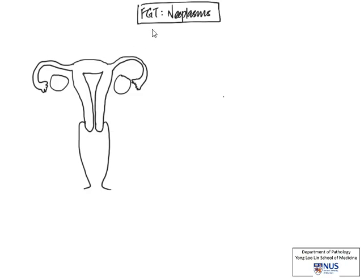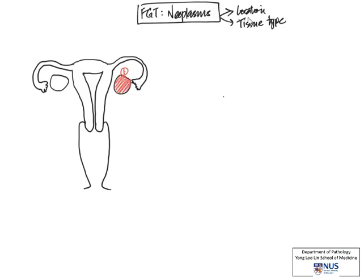In this mind map we are going to look at specifically neoplasms or tumors in the female genital tract. A useful approach would be to consider them in terms of the location or the components of the female genital tract and also the tissue types present in each location site. Because this is a very large and complex organ system, let's go site by site. The first thing we are going to look at are the ovaries.